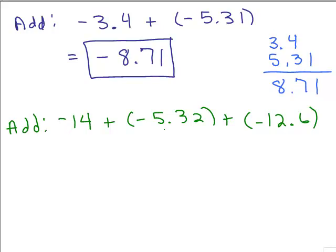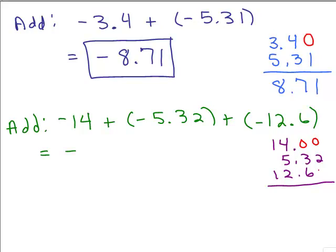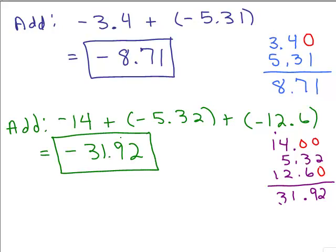We've got negative 14 plus negative 5.32 plus negative 12.6. They're all negative, so the answer is going to be negative and we just need to put all these numbers together lining up the decimals. Remember the 14 has a decimal after it. We have 5.32 and 12.6. You can put in the extra zeros. Adding those all up: that's a 2, that's a 9, that's where the decimal point goes — 9, 10, 11, carry the one — 31.92. But since I'm adding negative numbers, the answer is negative 31 and 92 hundredths.